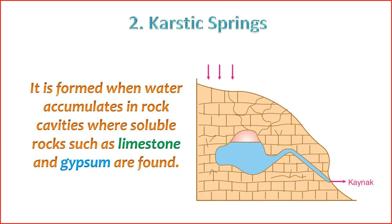6. Water Chemistry — karstic springs often have distinctive water chemistry. The water may be rich in dissolved minerals, especially calcium carbonate, which is derived from the dissolution of limestone or other carbonate rocks. 7. Emergence Points — karstic springs can emerge at various points in the landscape, including the base of cliffs, cave entrances, or openings in the ground. The emergence points are influenced by the structure of the underlying karst system.